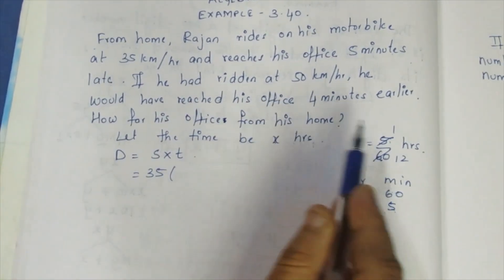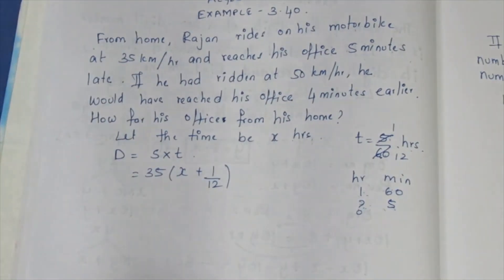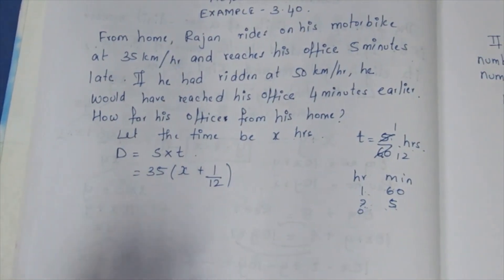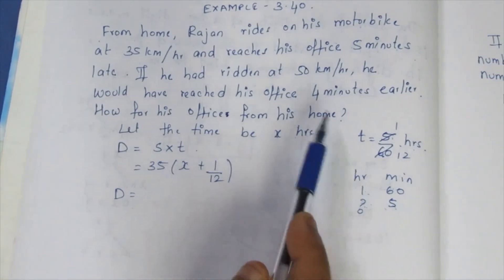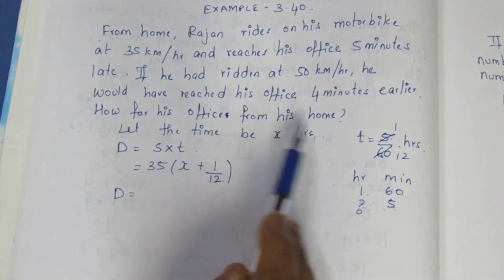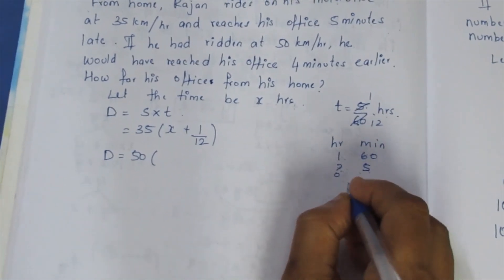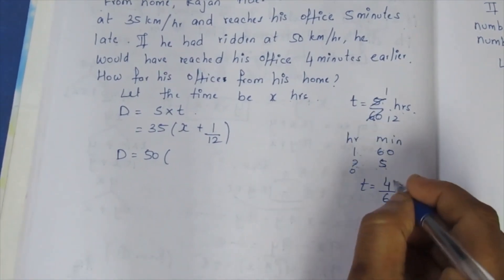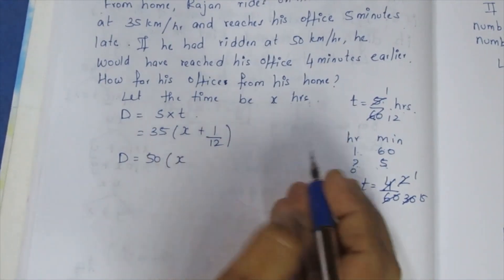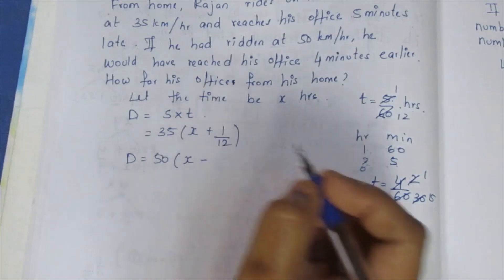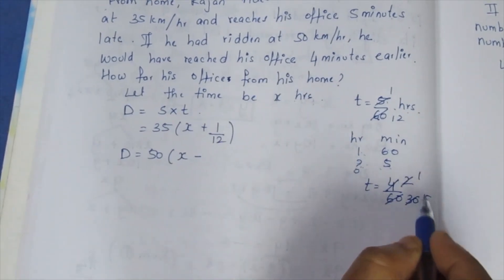Next, for the second distance: the speed is 50 km per hour and the time is 4 minutes earlier. Converting 4 minutes: 4 by 60, which simplifies to 1 by 15 hours. So this time is x minus 1/15. This is minus because he arrives earlier.